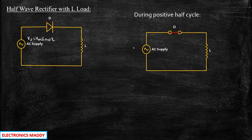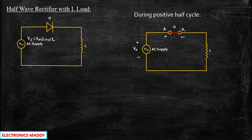During positive half-cycle, the supply will be positive and negative in this particular fashion, and the anode will be connected to positive and cathode will be connected to negative, because plus is appearing at this terminal. So consequently, the diode will be forward biased and acts as short circuit, and the current starts flowing through the load.